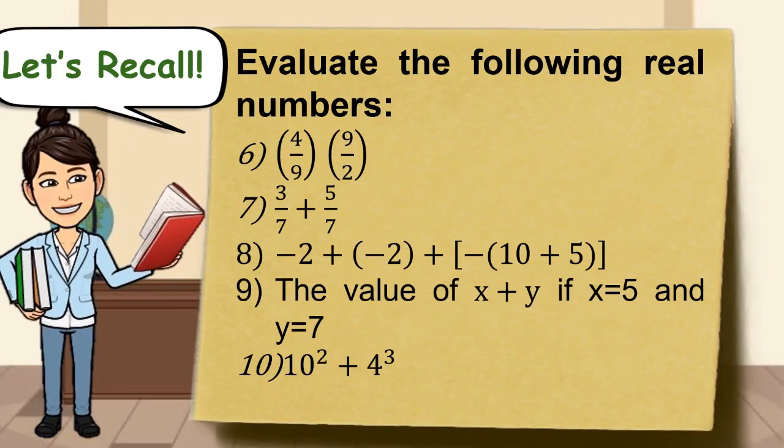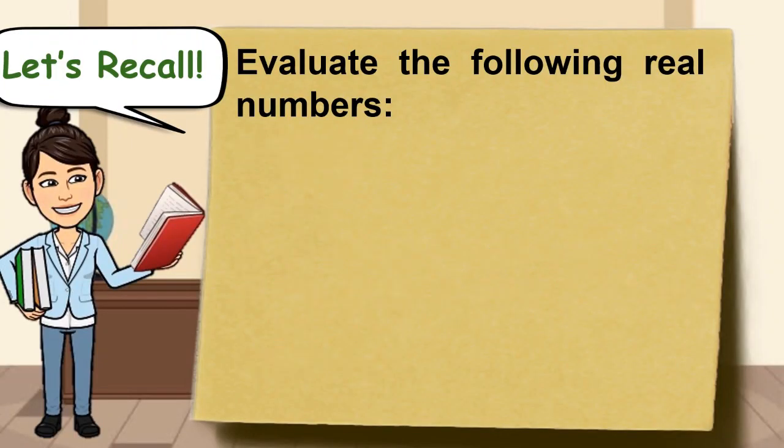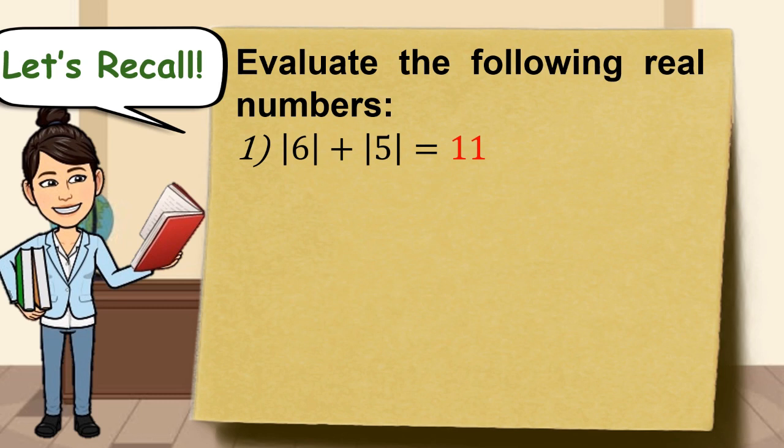Times up. Let's check your answers. Number 1, the absolute value of 6 plus the absolute value of 5 is equal to 11.